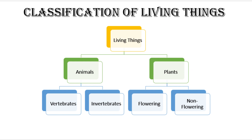So students, let's summarize what we have discussed. Classification means the grouping of organisms on the basis of their similar characteristics. Aristotle introduced classification almost 2,000 years ago and divided all living organisms into two groups: plants and animals. He further divided animals into vertebrates and invertebrates, which we have discussed in detail in another video. Plants are divided into two types: flowering and non-flowering. Flowering plants have roots, leaves, stem, flowers, fruits, and seeds inside the fruit.